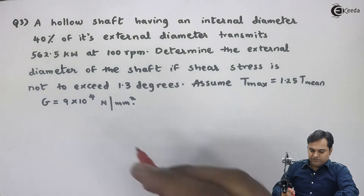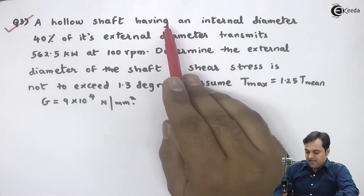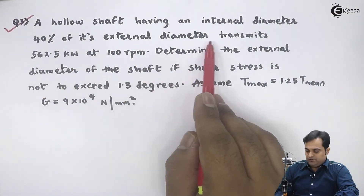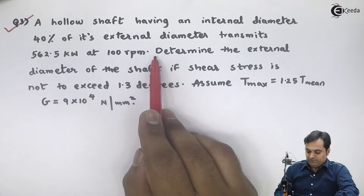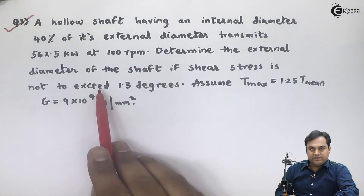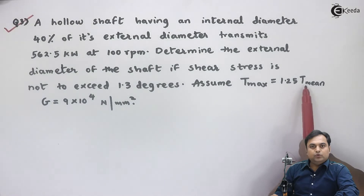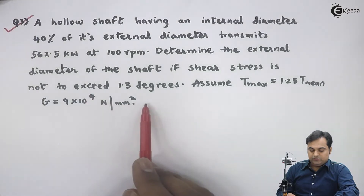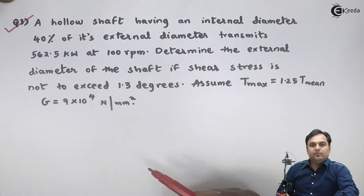Question number three: a hollow shaft having an internal diameter 40% of its external diameter transmits 562.5 kilowatts at 100 rpm. Determine the external diameter of the shaft if shear stress is not to exceed 1.3 degrees. Assume T_max is equal to 1.25 times T_mean. Capital G is 9 into 10 raise to 4 Newton per mm square — that is modulus of rigidity. I will now write this in the form of data.